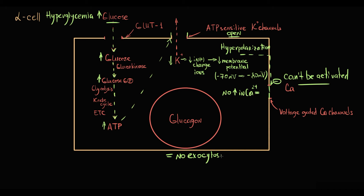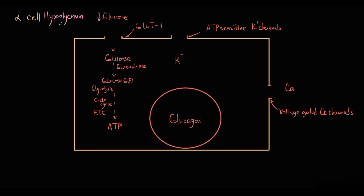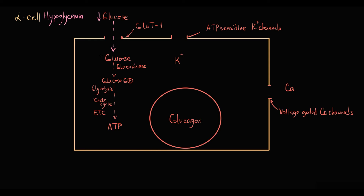In the case of hypoglycemia, if blood glucose level is low, then the amount of glucose entering through the GLUT1 transporter is low. Thereby, the amount of ATP produced by the cell is low.